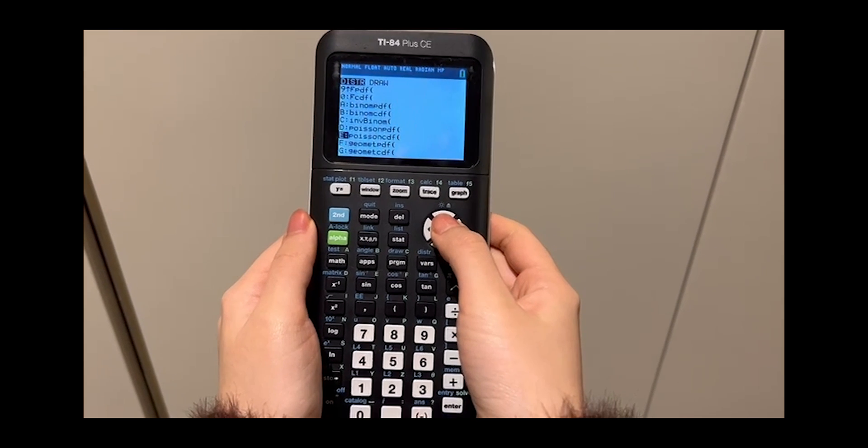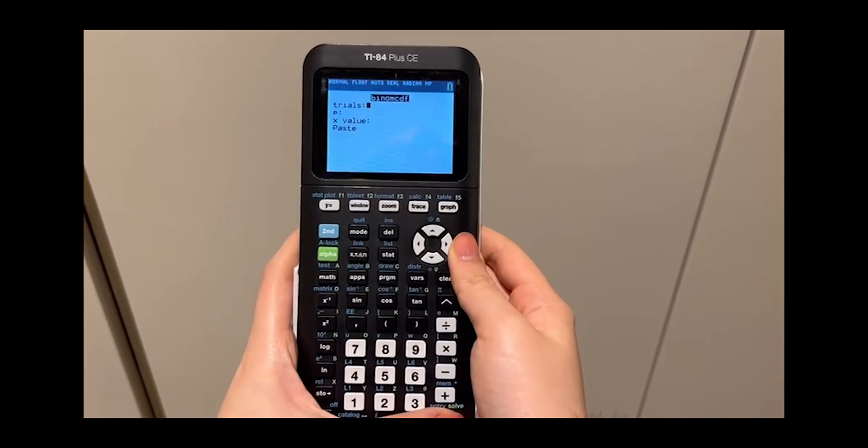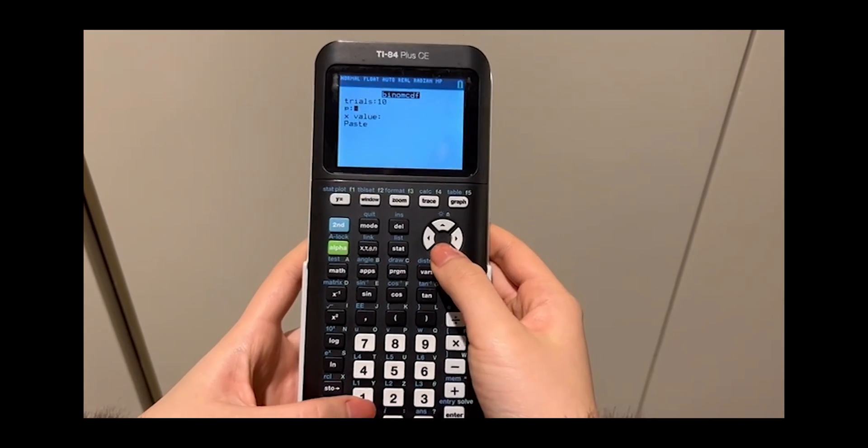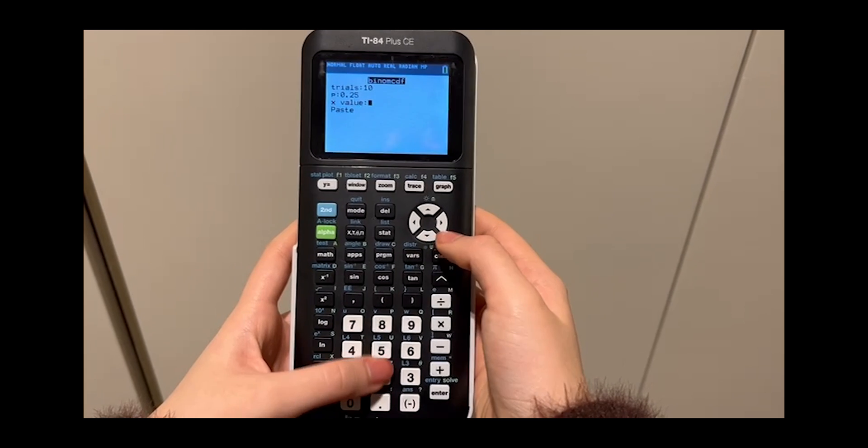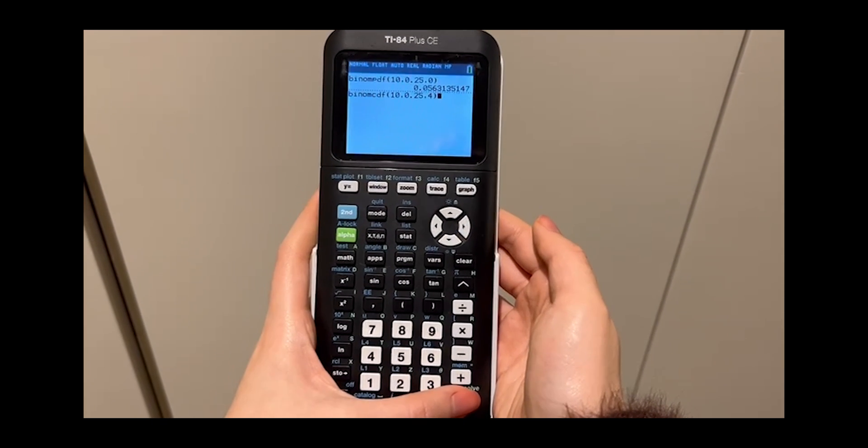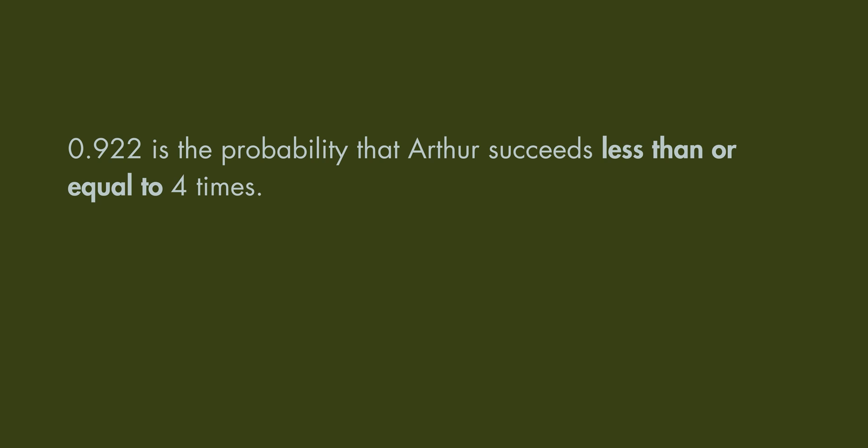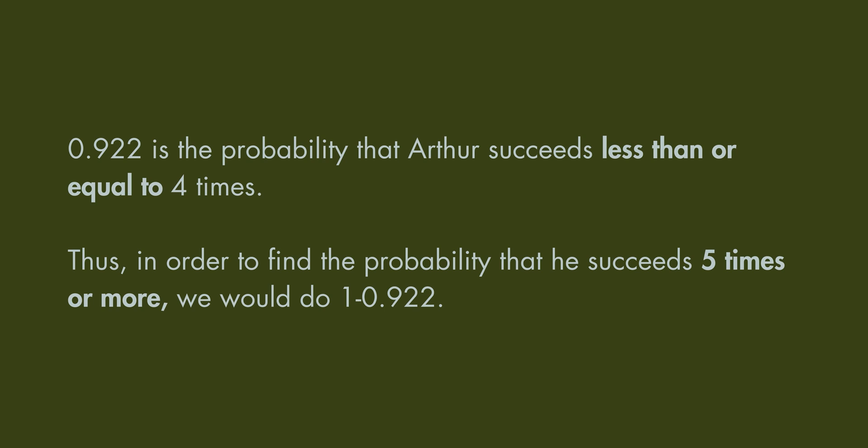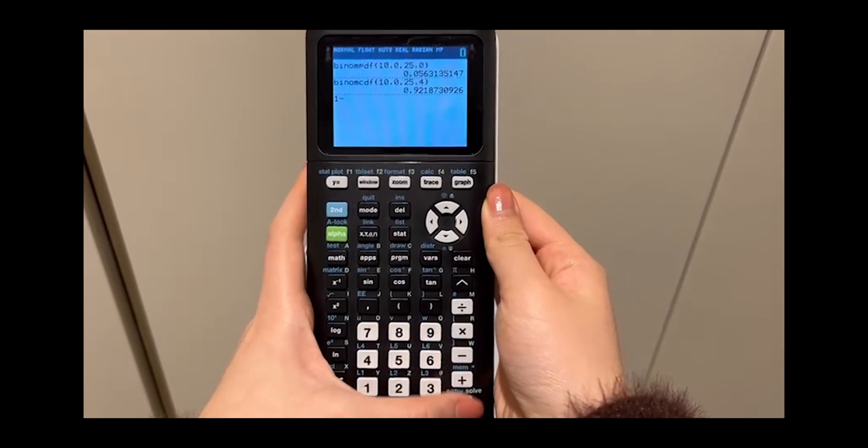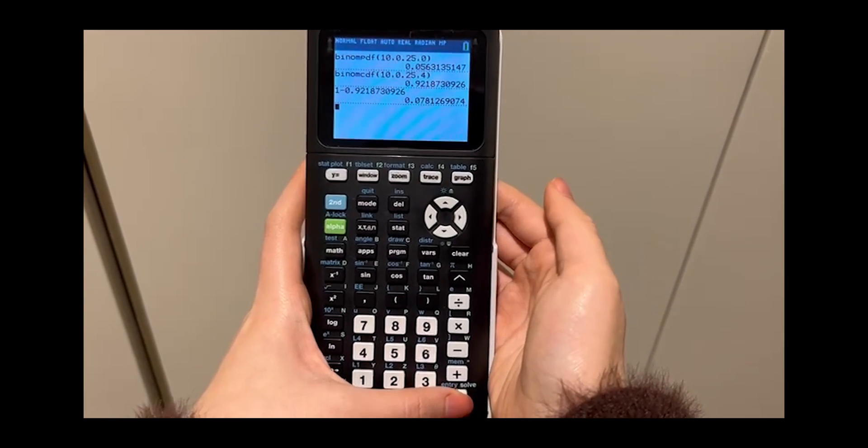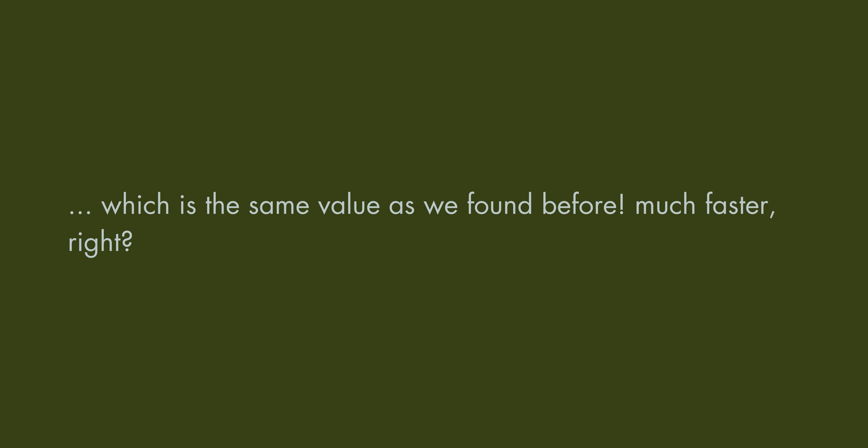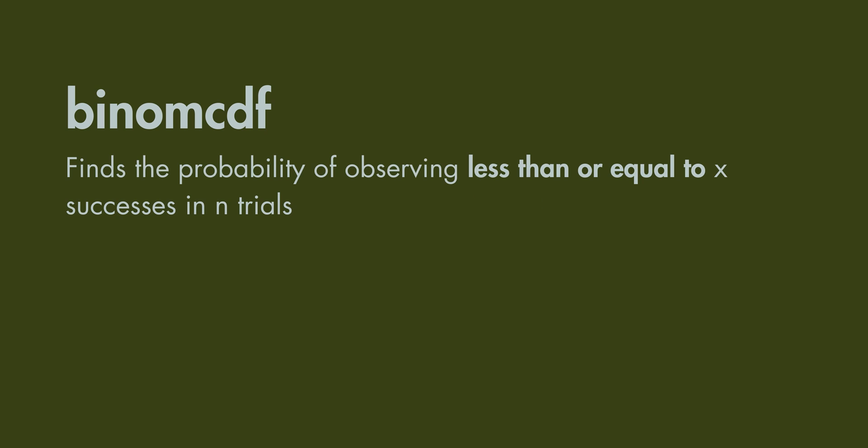For this, we can follow the same steps, but scroll until we see b, binomial cdf, then press enter. Binomial cdf stands for binomial cumulative probability and can help us save a lot of time. This function gives you the probability there will be 0 to x successes in n trials. In other words, it gives the probability of observing less than or equal to x successes in n trials. Now, back to your regularly scheduled activity.